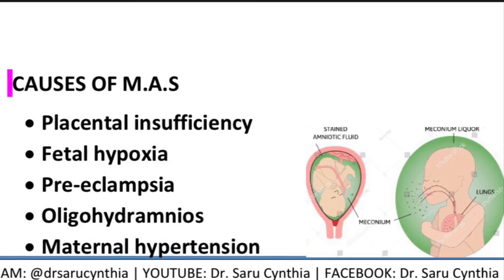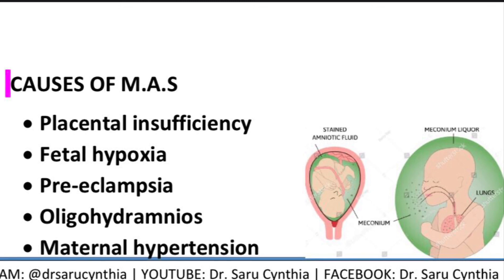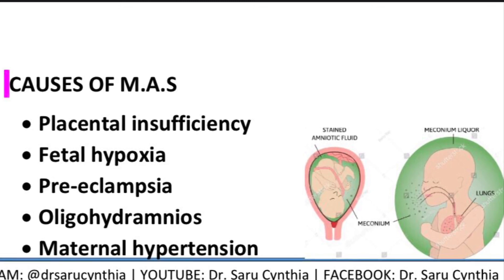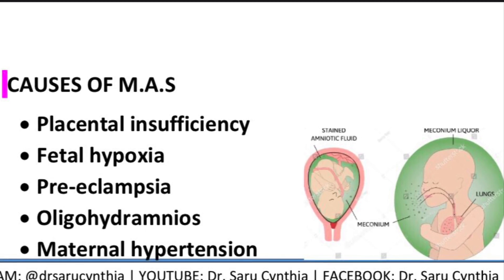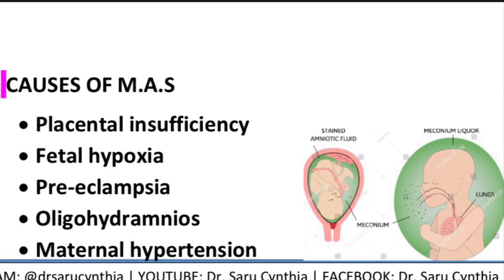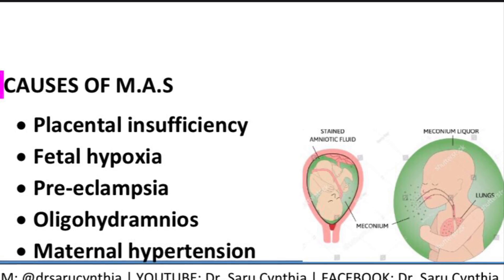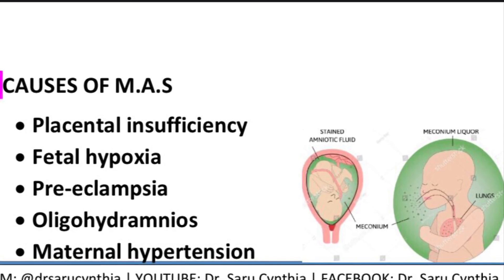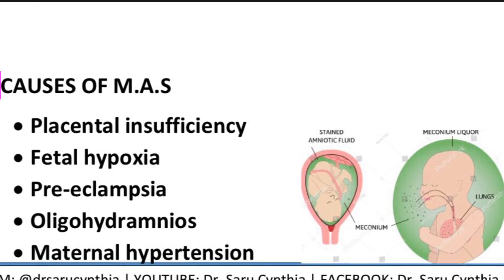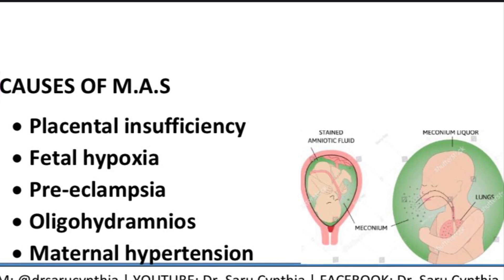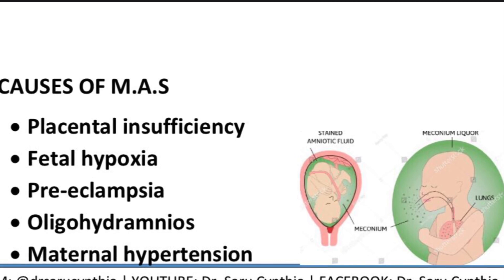The causes of meconium aspiration syndrome are quite repetitive — you should know the causes of fetal hypoxia or fetal distress secondary to hypoxia. These include placental insufficiency, fetal hypoxia, preeclampsia, oligohydramnios, maternal hypertension, and maternal drug use, especially tobacco. Those are the most commonly occurring causes of MAS.